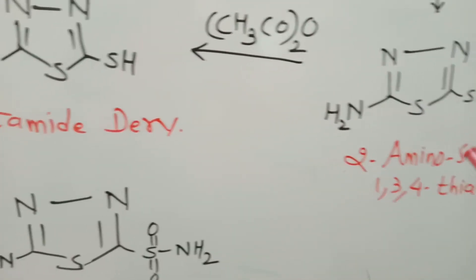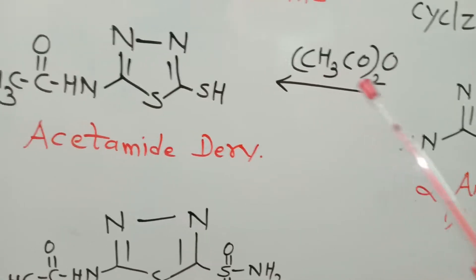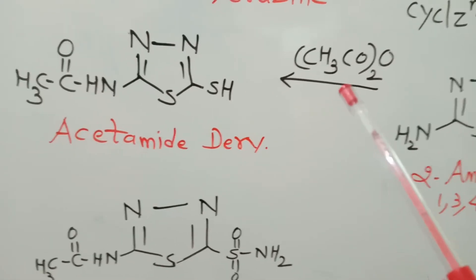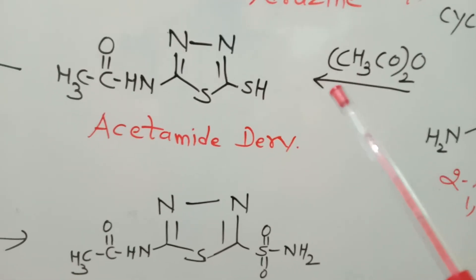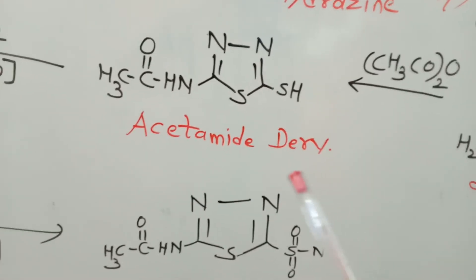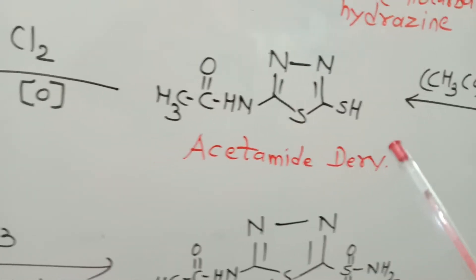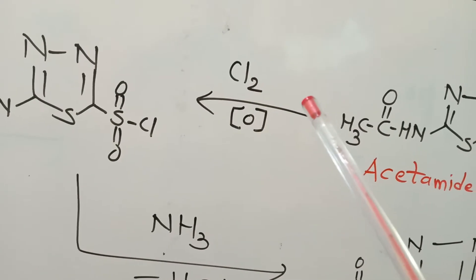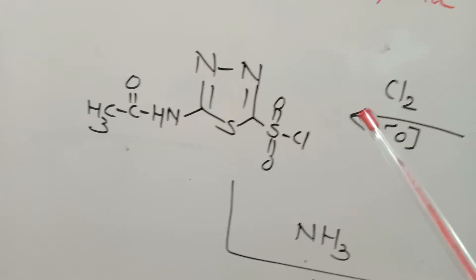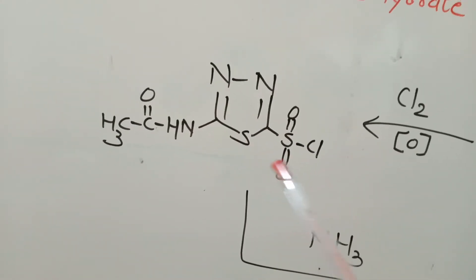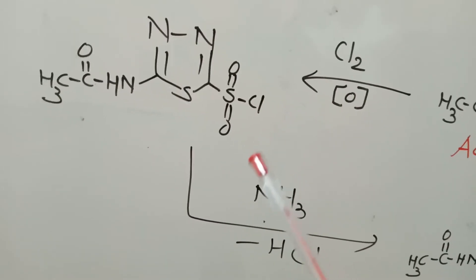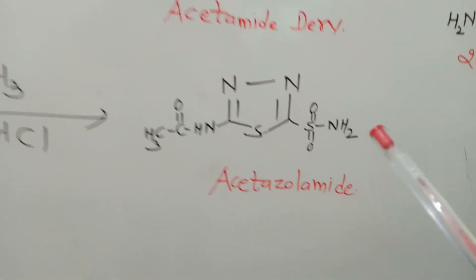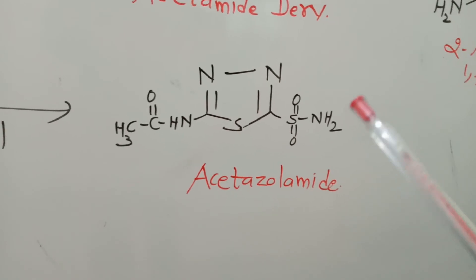Now, this heterocyclic nucleus reacts with acetic anhydride where the amino group reacts with acetic anhydride to undergo typical nucleophilic acyl substitution reaction to give the corresponding acetamide derivative. This acetamide derivative on chlorination and oxidation converts the mercapto group into the corresponding sulfonyl chloride, which further reacts with ammonia to give the corresponding acetazolamide compound.